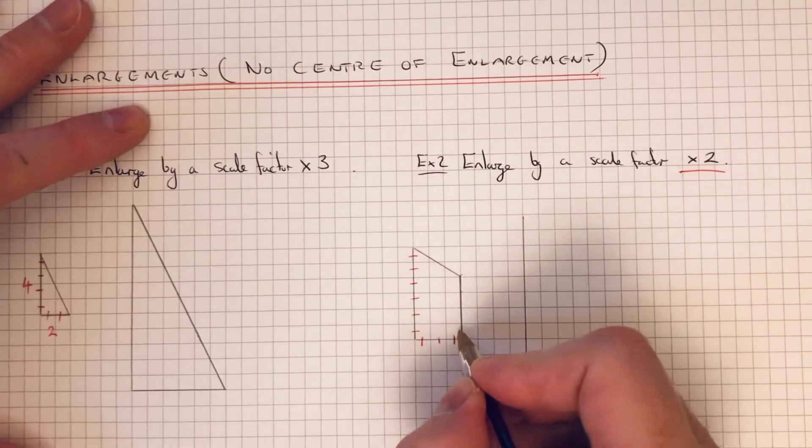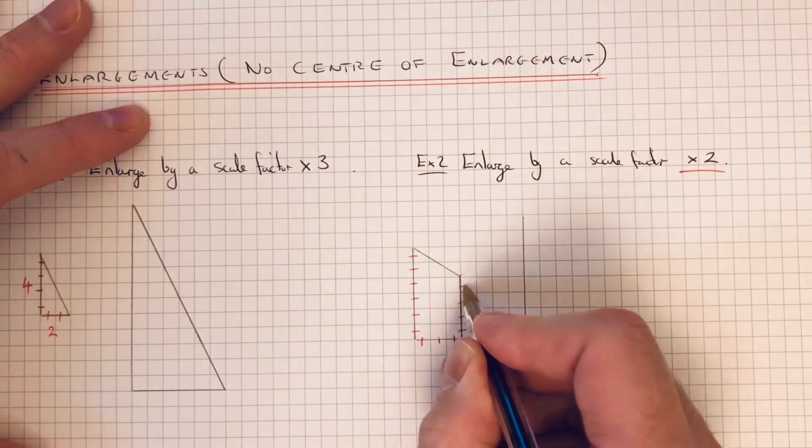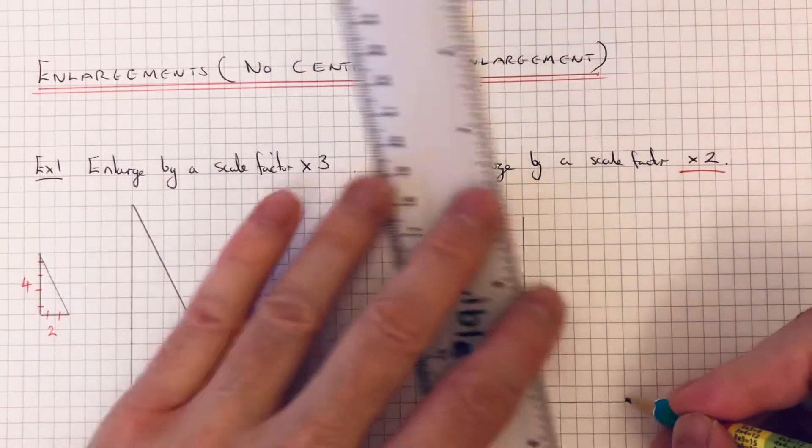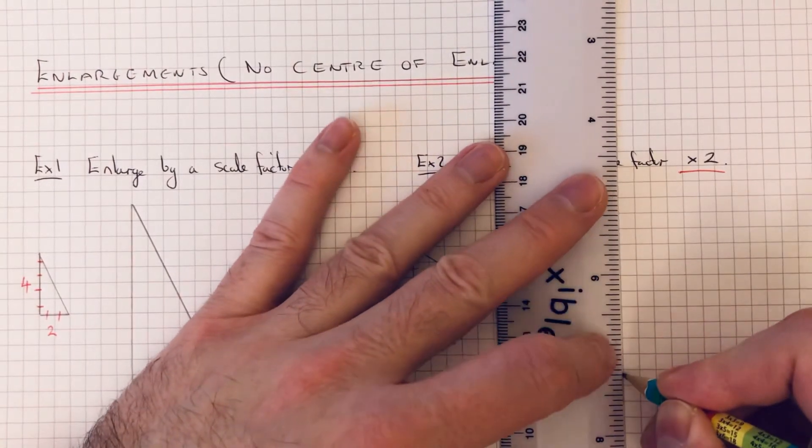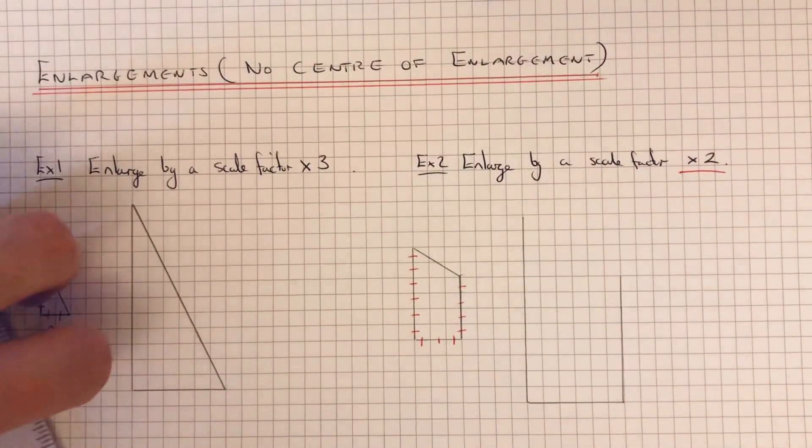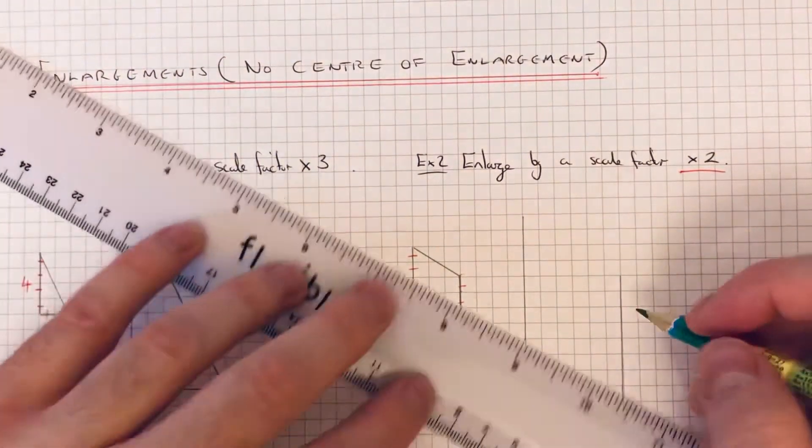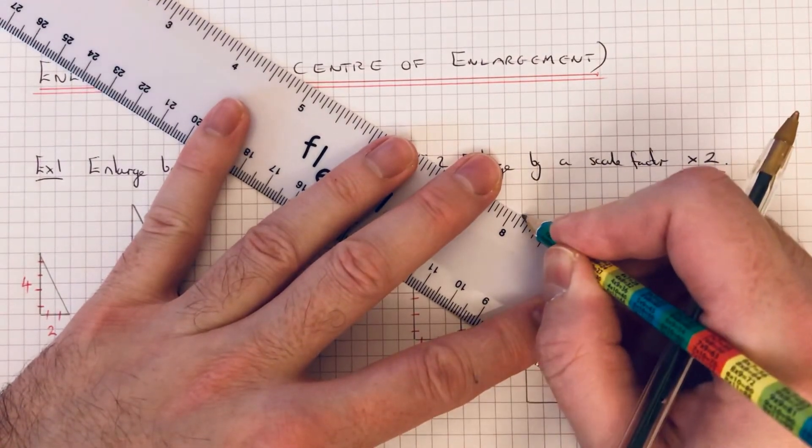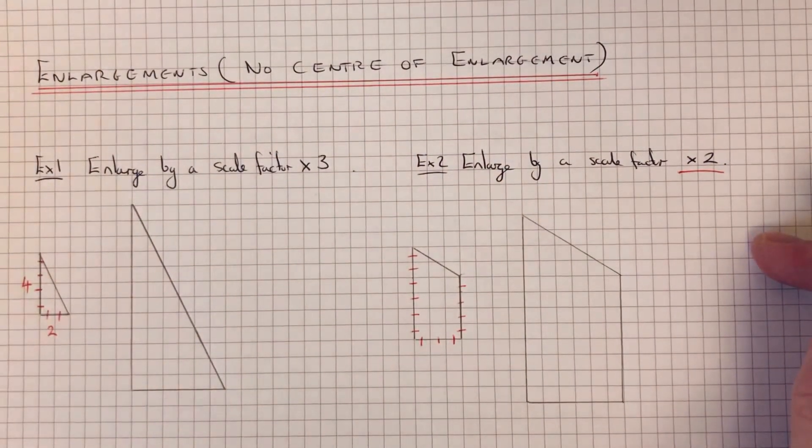Let's do this edge next. So we've got 1, 2, 3, 4. If we double that, that is 8. So 2, 4, 6, 8. And then we can just join our final edges up to give us the top edge. And there's our final answer. So all the edges on that new shape are twice as long as the original.